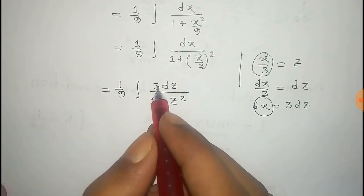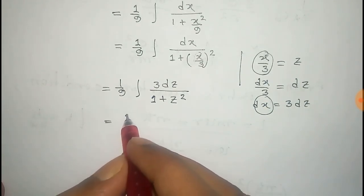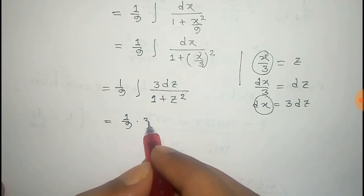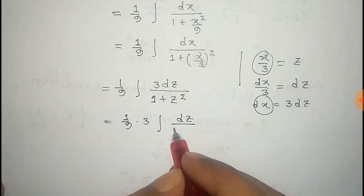Now this 3 is constant so it comes out of the integral. So that is 1 by 9 into 3. Remaining integral dz by 1 plus z square.